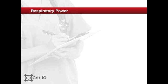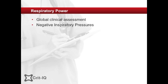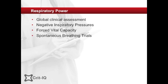Reduced respiratory muscle power is a common cause of respiratory insufficiency. Various factors play a part, but weakness is common in very sick patients. Muscle power can be gauged by a number of methods. A global assessment of muscle strength can be gained on examination, such as limb strength, the ability to sit or raise the head from the bed, and grip strength. Specific testing of respiratory muscle power includes negative inspiratory pressures and other methods.